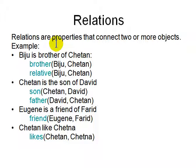We all know relations from family relations. For example, brother is a relation. Biju is a brother of Chetan, so we write brother(Biju, Chetan). So Biju is first and Chetan is second.